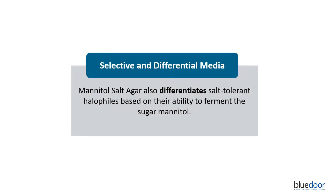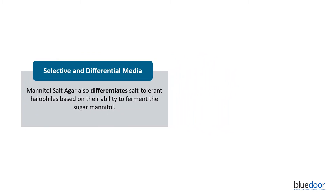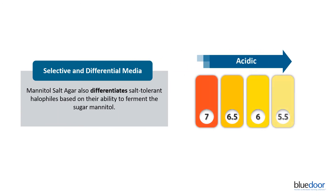Mannitol salt agar also differentiates halophilic bacteria based on their ability to ferment mannitol. The pH indicator phenol red detects mannitol breakdown through a color change from red to yellow as the pH shifts towards acidic. This color change is observable within the medium, allowing for the identification of mannitol-fermenting Staphylococci.